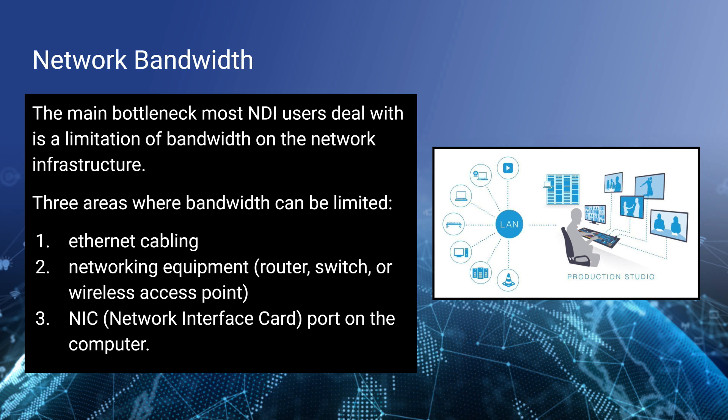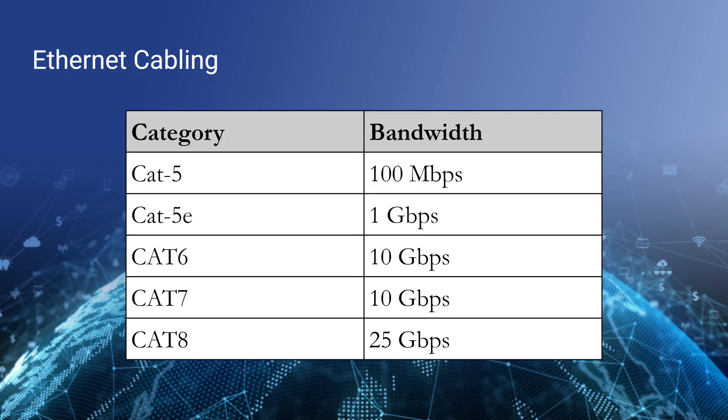The cables that connect your computer to the local area network may become a bottleneck where they're limited in the bandwidth they can support. Networking equipment all the way down the chain — from the router to the network switch to the wireless access point — can also have limited throughput. And finally, the network interface card on your computer, the port you actually plug the ethernet cable into, is also likely limited in its bandwidth capabilities. We need to understand these and make sure everything works perfectly.